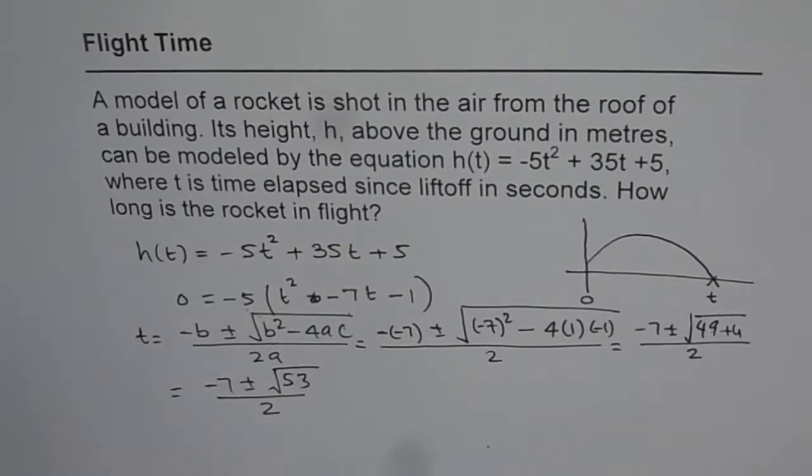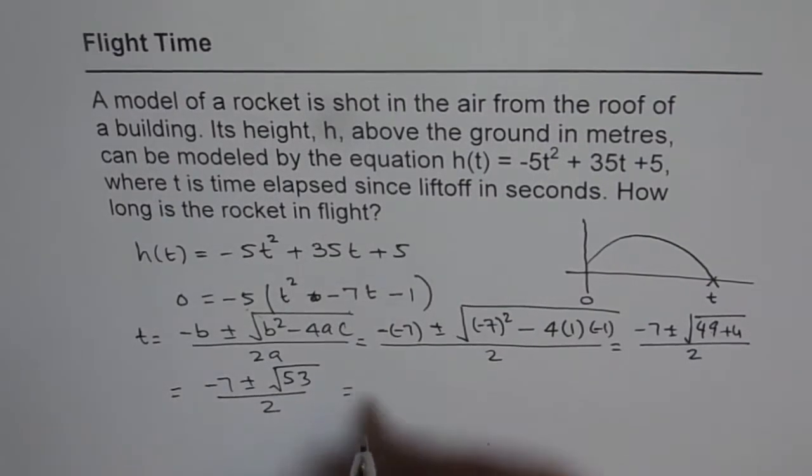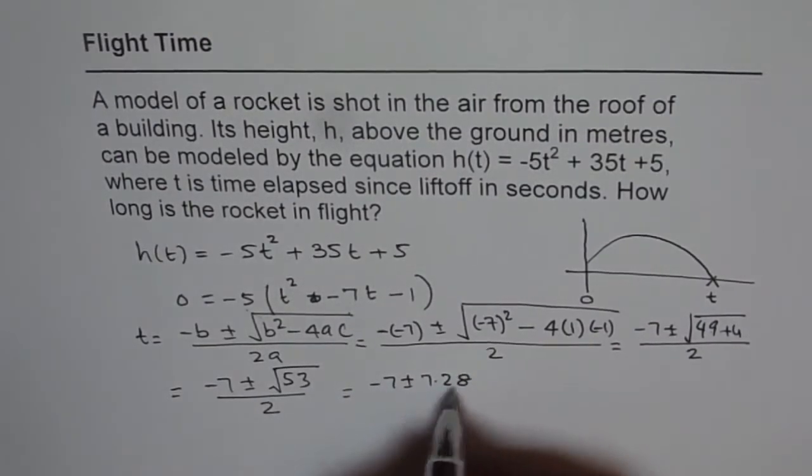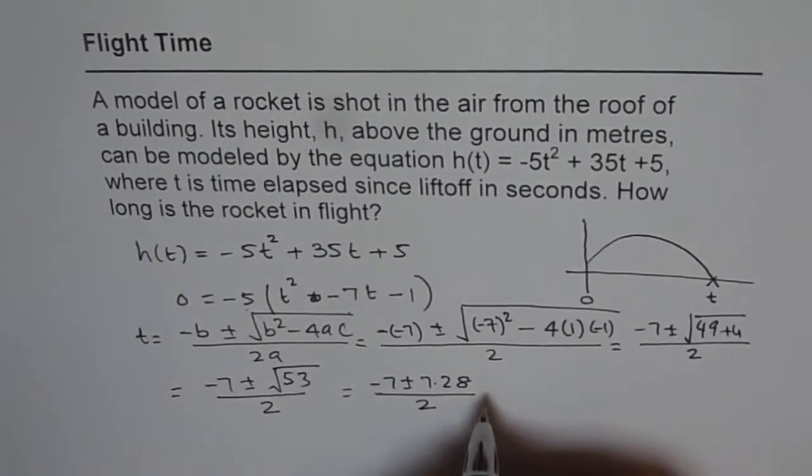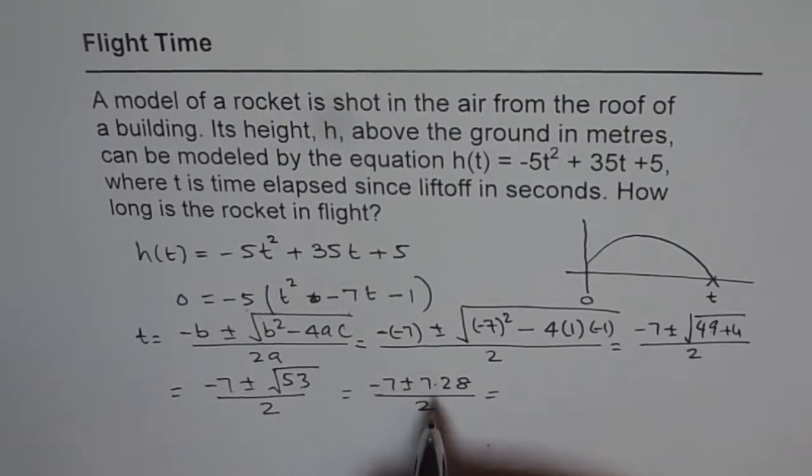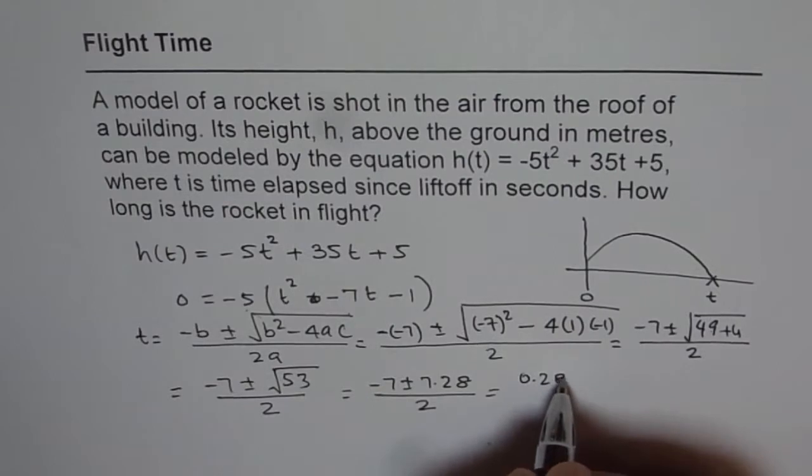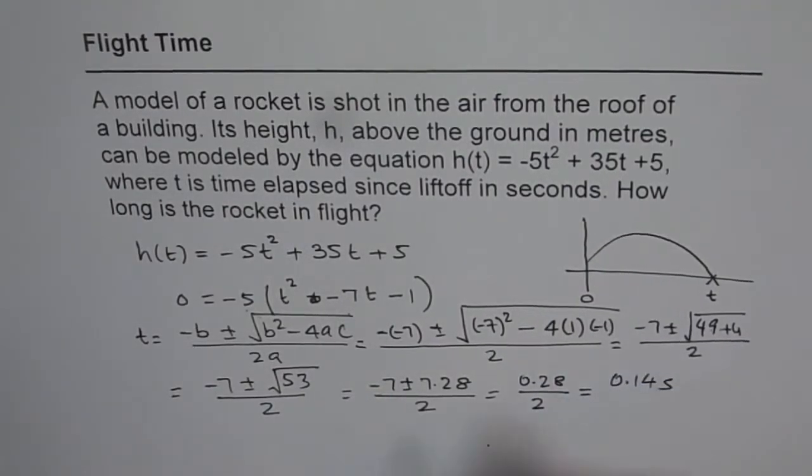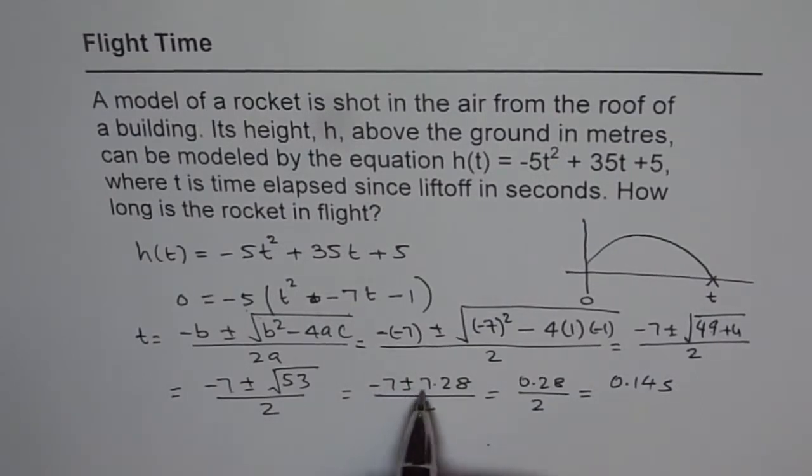So what we can do is, we can evaluate using the calculator. So √53 = 7.28. So we can write this as -7 ± 7.28 divided by 2. Now 7.28, if we use the plus term, then we get 0.28 divided by 2. That gives us 0.14 seconds.